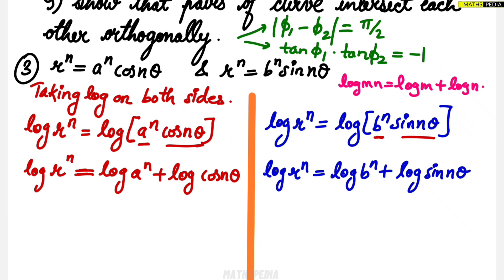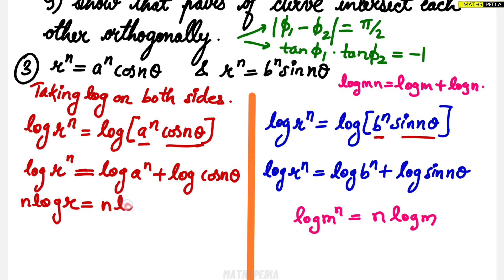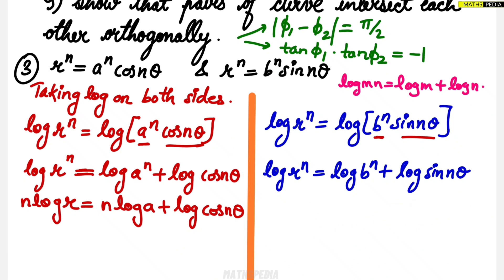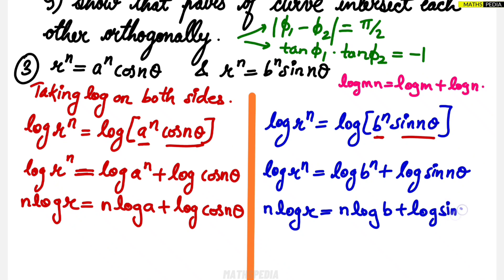One more property we apply: log m^n = n log m. So the power comes in front of the logarithm. Applying this, we get: n log r = n log a + log cos(nθ) for the first equation, and n log r = n log b + log sin(nθ) for the second equation.